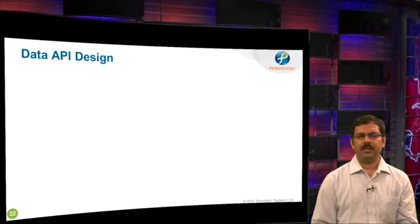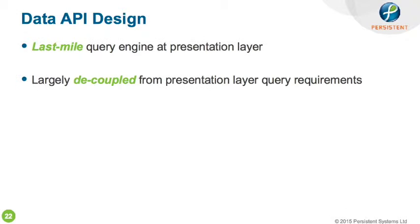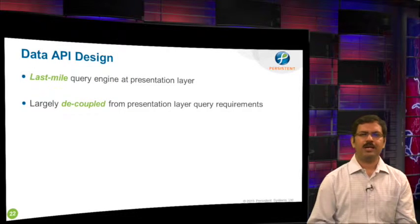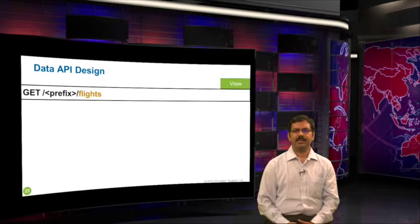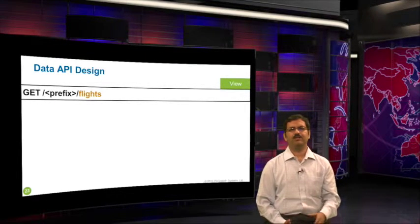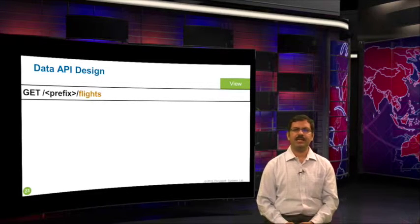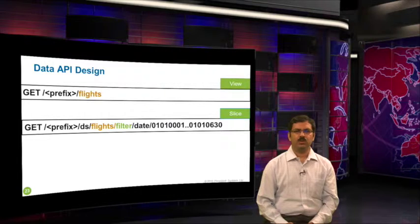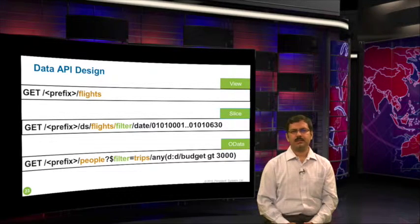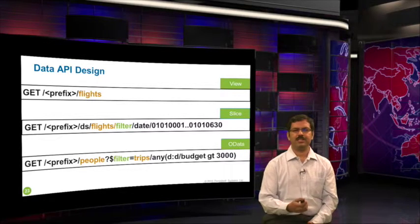Speaking of data API design — in this architecture, the last-mile query is happening at the presentation layer, so your data API is largely decoupled from any query requirements the UI may have, which is unpredictable because it's exploratory. If you model the API for this architecture, it would look very simple — you treat the data view itself as a resource. If you treat it according to the REST principle, it becomes a cacheable entity on the web infrastructure. If you want incremental load, you might give a slice of this view and build an API accordingly. Or if you want to get even more sophisticated, you can leverage the OData specification to build APIs for this purpose.